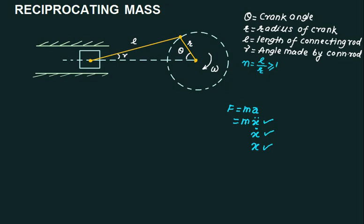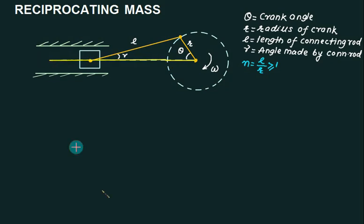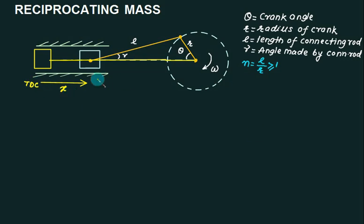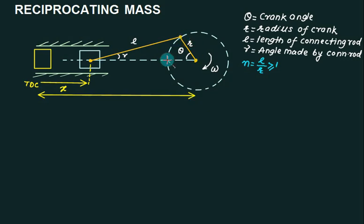Consider the slider-crank mechanism. When the crank is at a given position, the connecting rod extends from the crank pin to the piston. If this position is called the dead center, and the piston is some distance away from the dead center, let's call that distance X. So X is the distance of the piston from TDC. The total distance from TDC to the crank center is L plus R.